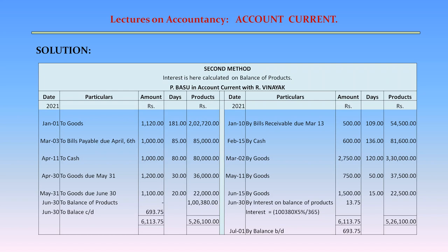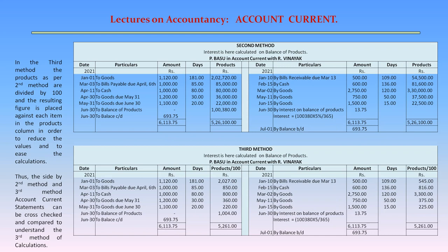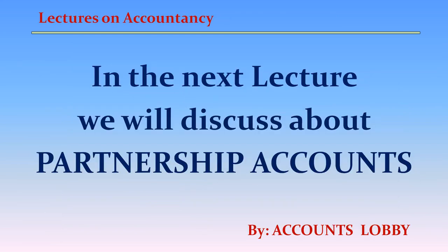In the second method, the account current appears with all figures and balance interest net — all figures are similar to those of the first method. In the third method, the products as per the second method are divided by 100 and the resulting figure is placed against each item in the products column, in order to reduce the values and ease calculations. The second and third method account current statements can be cross-checked and compared to understand the third method of calculations. In the next lecture, we will discuss about partnership accounts.